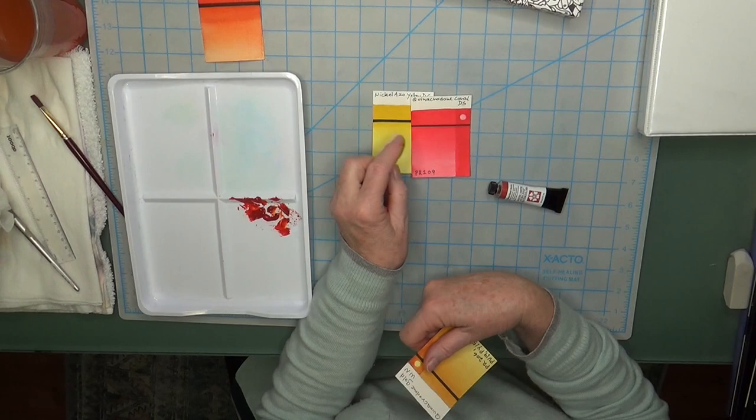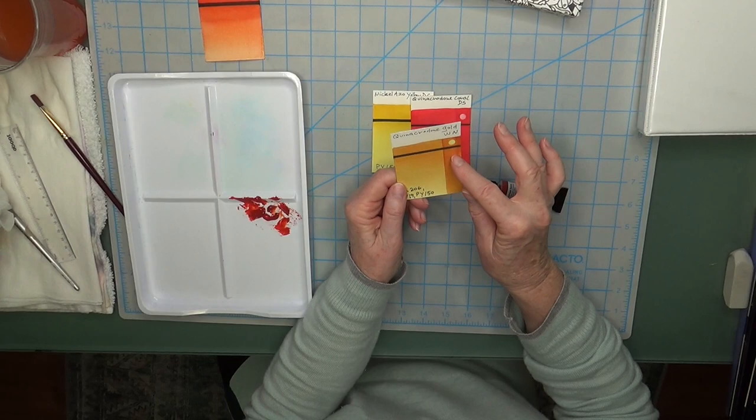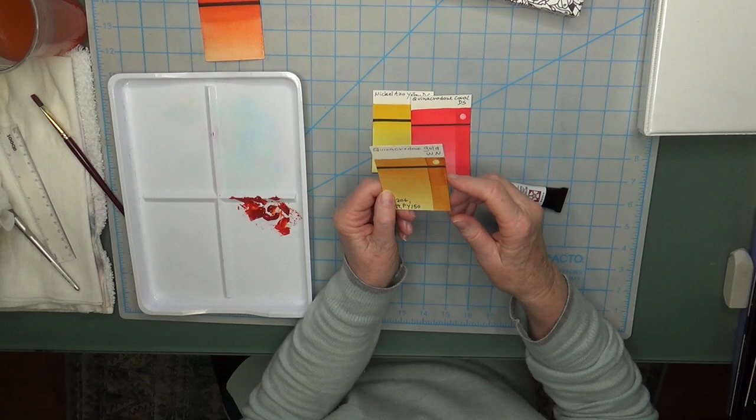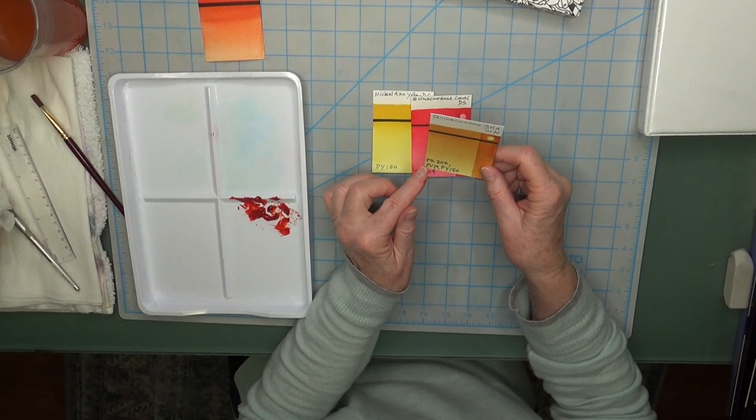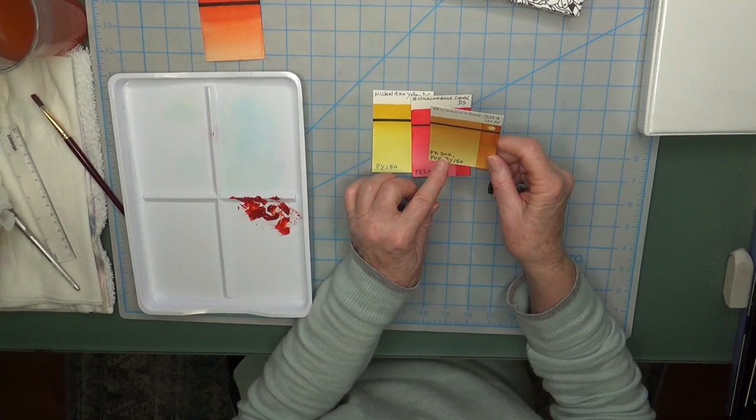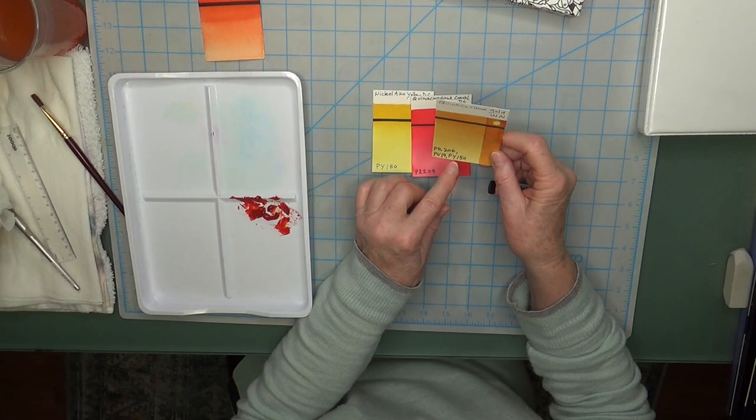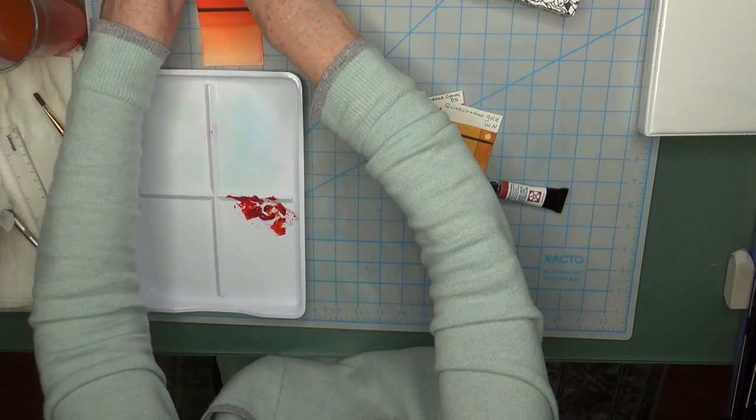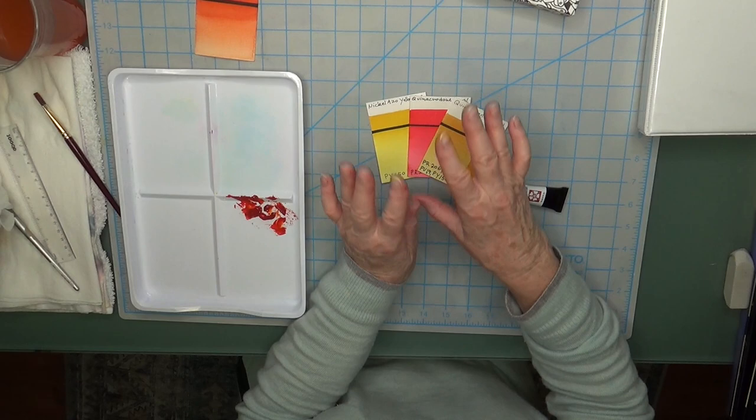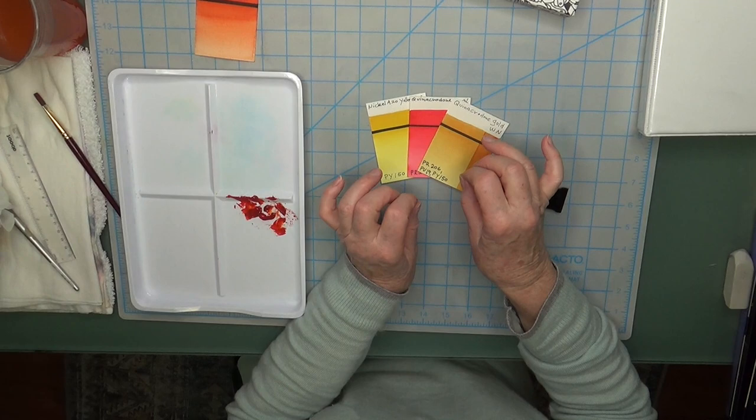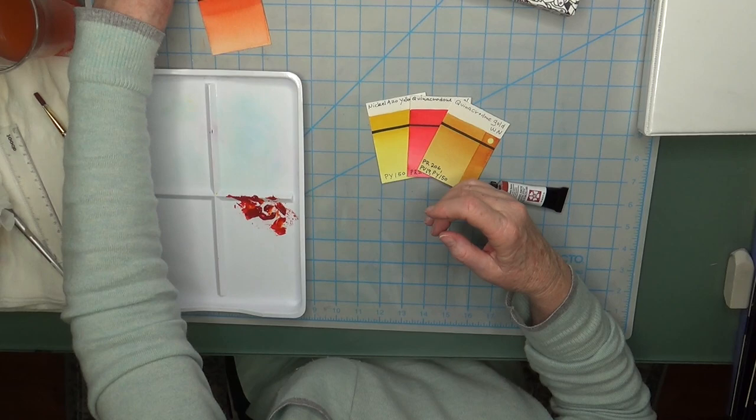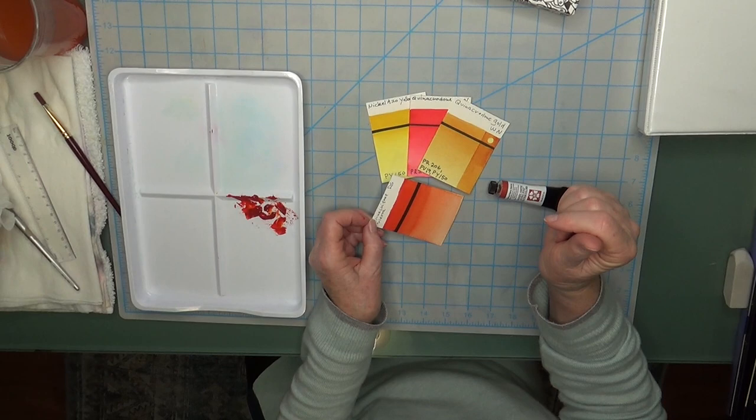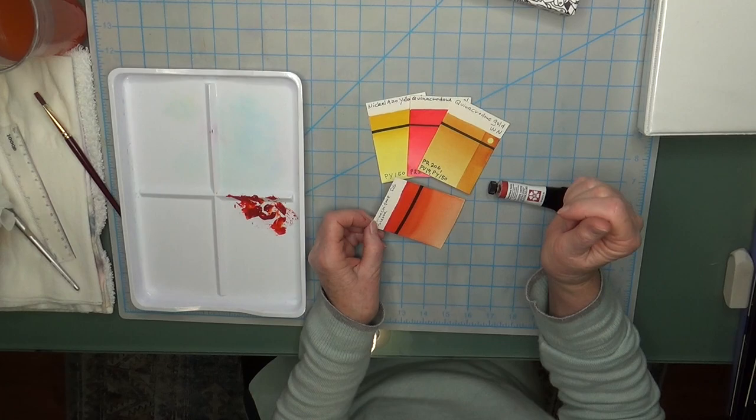Here's the Nickel Azo Yellow from Daniel Smith, and here is the Quinacridone Coral from Daniel Smith. I only have the Quinacridone Gold from Winsor & Newton, so it's not going to be exactly the same as Daniel Smith. Quinacridone Gold from Winsor & Newton has PR206, Pigment Violet 19, and Pigment Yellow 150. So basically this color from Daniel Smith consists of a mix of those three.